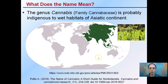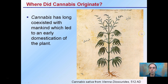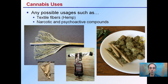Where does cannabis originate? Cannabis has long coexisted with mankind, which led to early domestication of the plant, and it shows up in a lot of old records. It has been around human interactions for a very long period of time, probably because of its diverse amount of uses — it could be used as textiles and fibers, such as hemp and hemp clothing.